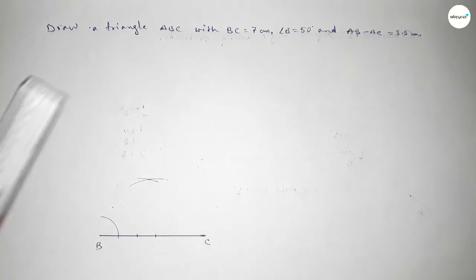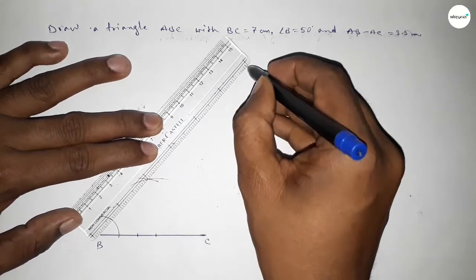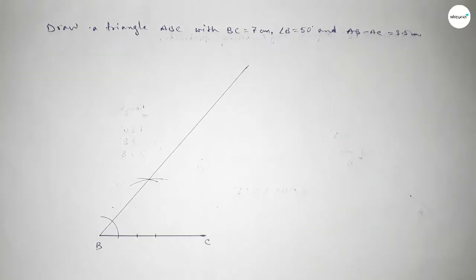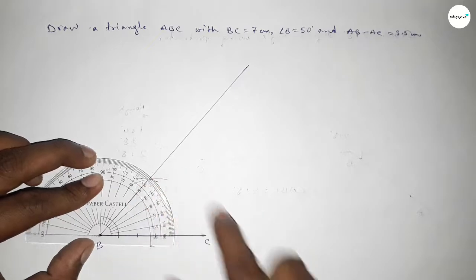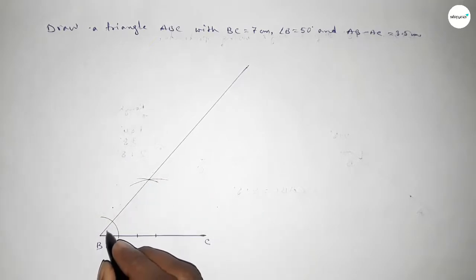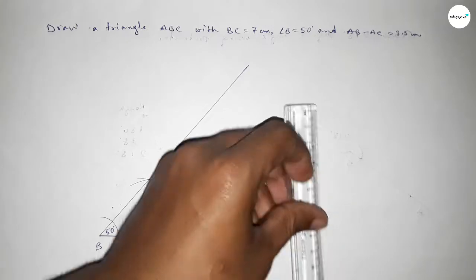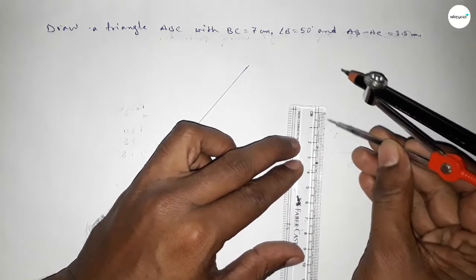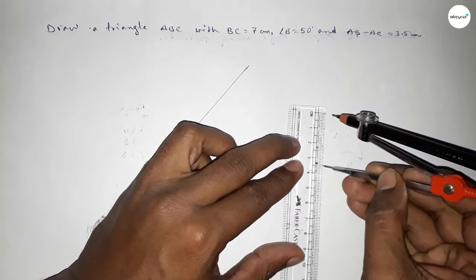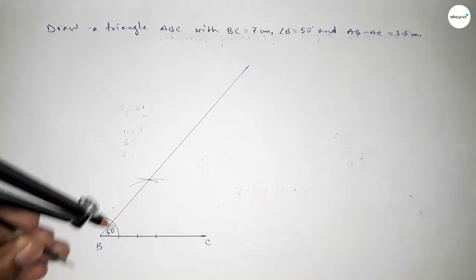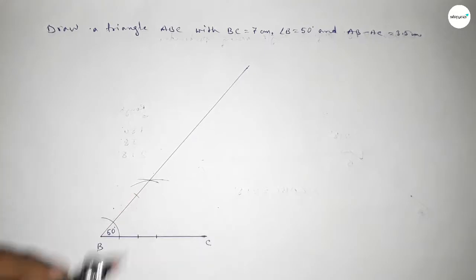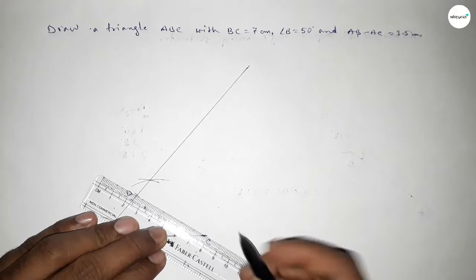Both curves intersect at a point. Joining this line gives us the 50 degree angle. Checking — this is perfectly 50 degrees. Now taking a length of 3.5 centimeters, putting the compass on point B, cutting to mark point D.